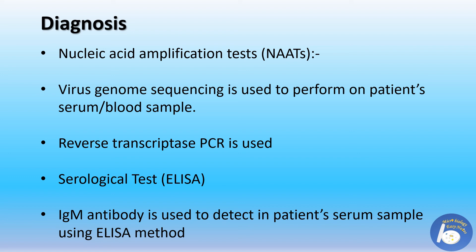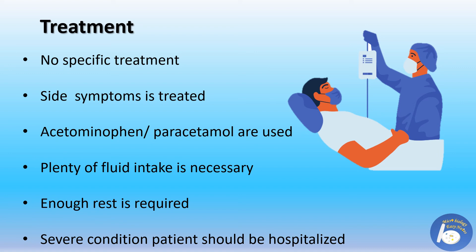The serological method used for dengue virus diagnosis is ELISA — enzyme-linked immunosorbent assay. Anti-dengue antibodies formed in the patient's body are detected by this method. Immunoglobulin M (IgM) antibodies are detectable within a week after infection and remain detectable for about three months. The presence of IgM indicates a recent dengue virus infection, while the presence of immunoglobulin G (IgG) informs about a past infection.